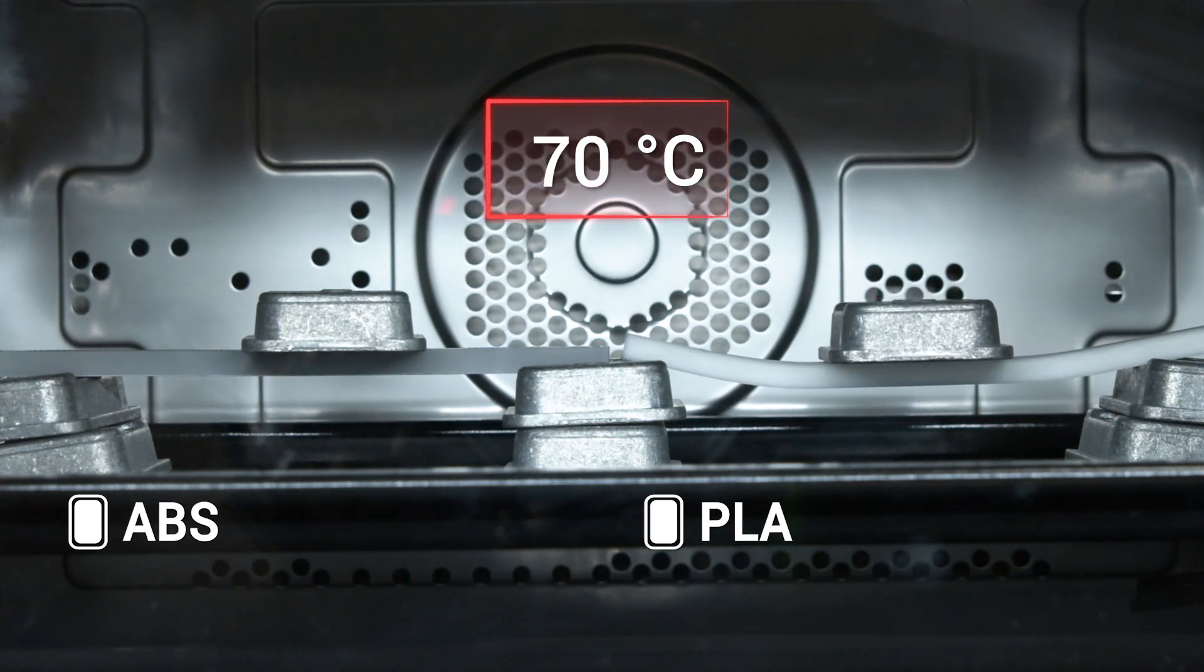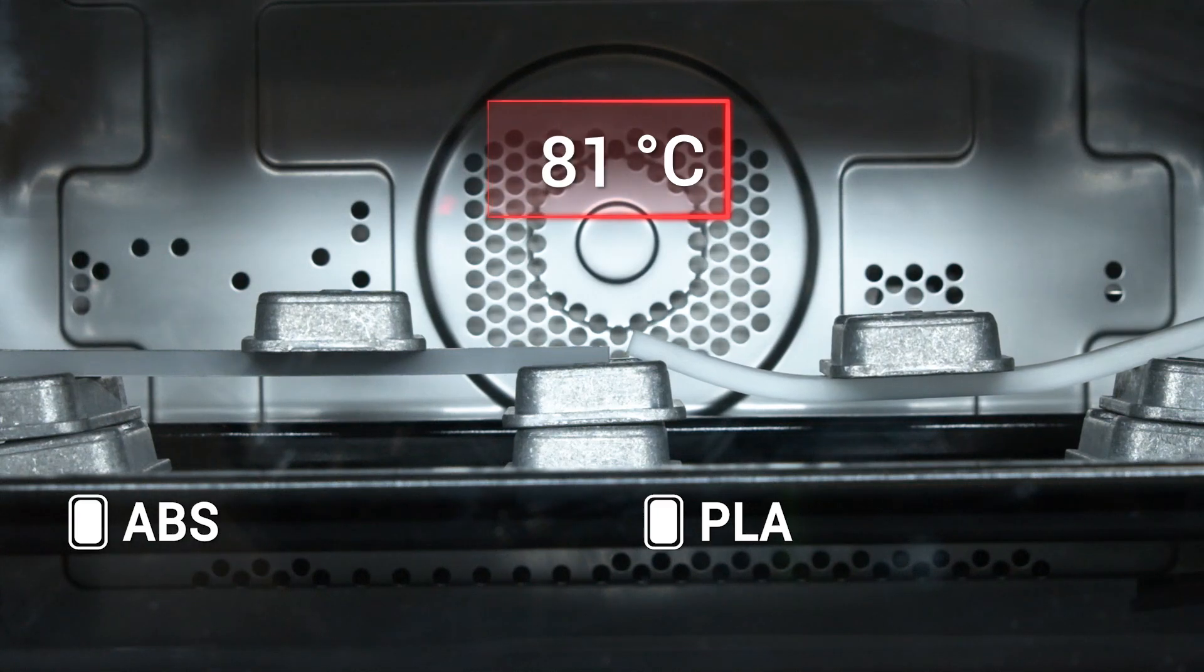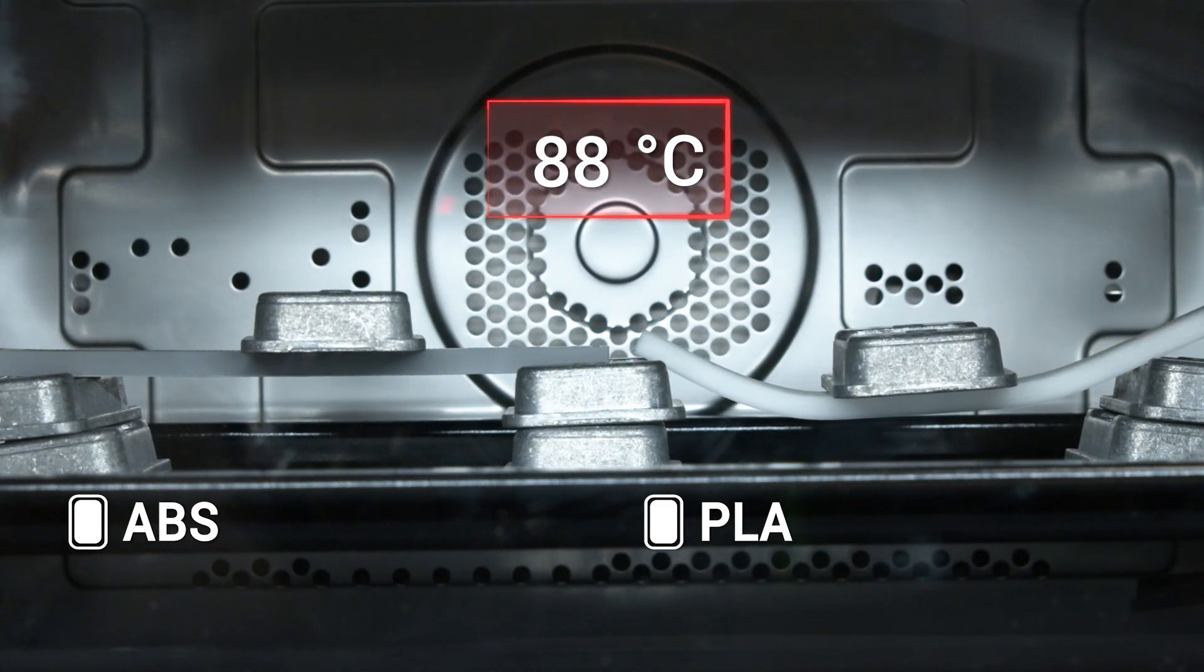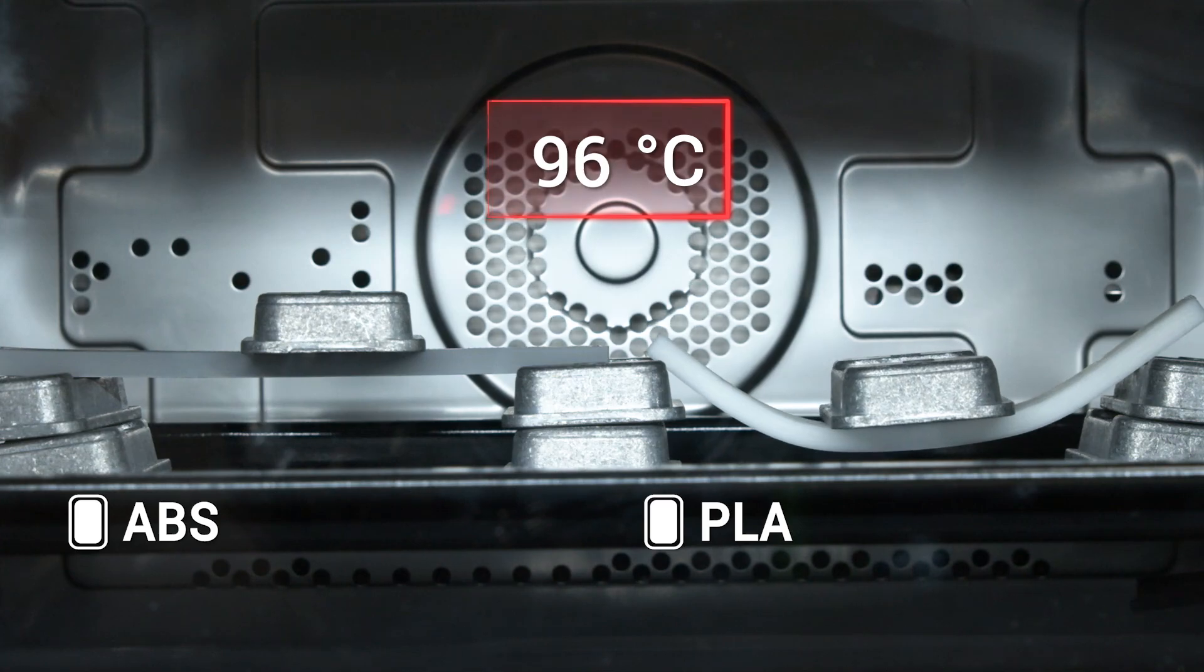That means ABS can be used in a hotter environment or as mechanical structures. Examples include automobile parts, machine enclosure, and some outdoor applications.